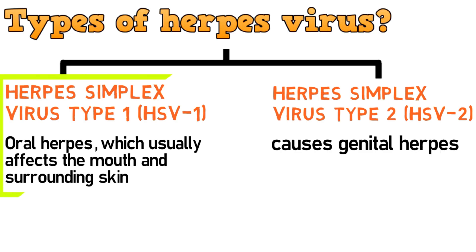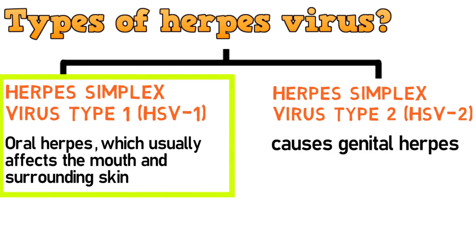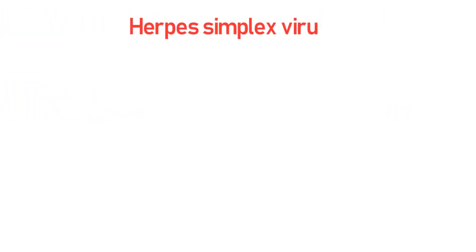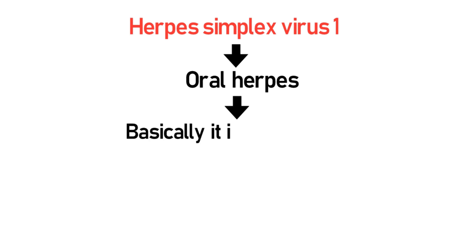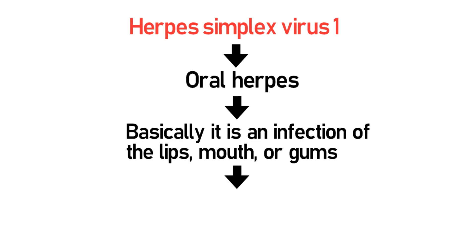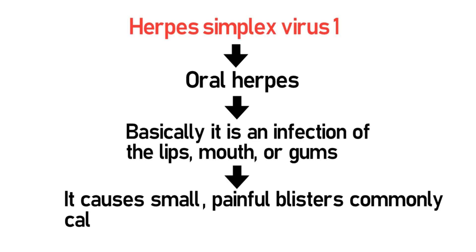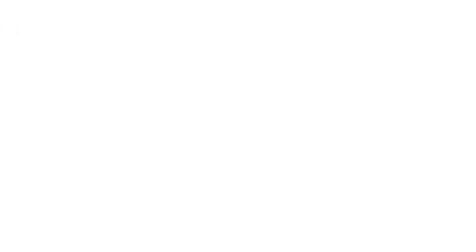In this video, we will focus more on oral herpes. As we have already discussed, herpes simplex virus 1 causes oral herpes. Basically, oral herpes is an infection of the lips, mouth or gums. It causes small painful blisters, commonly called cold sores or fever blisters, which look like this.